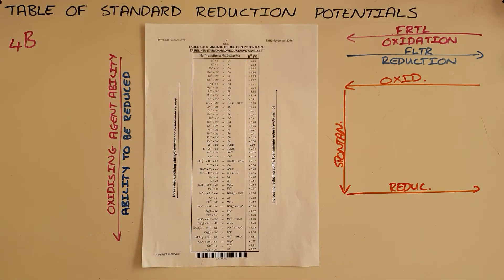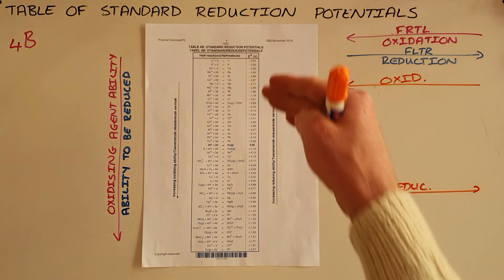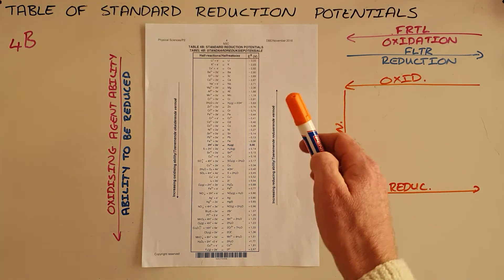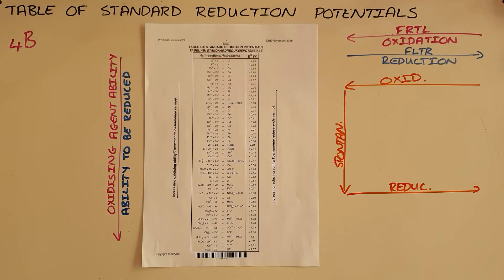We can see the cell potential for lithium is negative 3.05, and we can read our cell potentials off there. These are all cell potentials at standard conditions, and those can be changed. The cell potential can be changed by changing the factors that affect the rate of a reaction: concentration, temperature, and pressure.